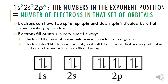Electrons fill groups of boxes in the orbital diagram before moving on to the next group. Electrons don't like to share individual orbitals, so they will fill an upspin first in every orbital in a group before pairing with a downspin. Think of it like having bedrooms at home — if you have a little brother or sister, you don't want to share a room until you absolutely have to. If you have three bedrooms, everyone spreads out before you start pairing up.